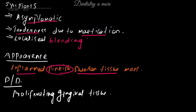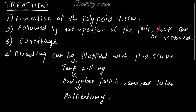For differential diagnosis, we consider proliferating gingival tissue, which can appear similar to pulp polyp.